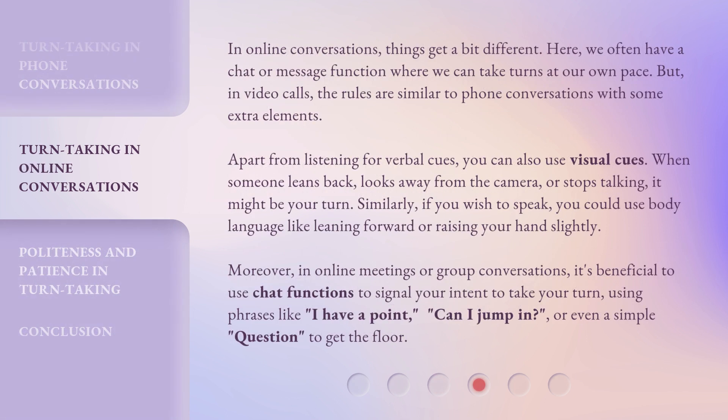In online conversations, things get a bit different. Here, we often have a chat or message function where we can take turns at our own pace. But in video calls, the rules are similar to phone conversations with some extra elements. Apart from listening for verbal cues, you can also use visual cues. When someone leans back, looks away from the camera, or stops talking, it might be your turn.